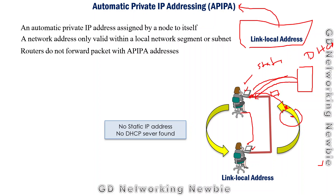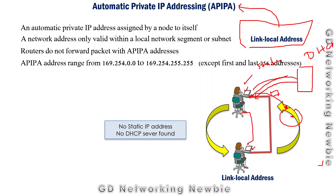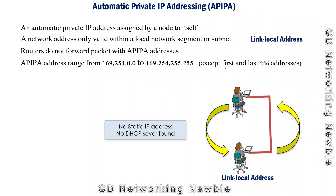With APIPA, nodes can communicate using a specific address range. That range is from 169.254.0.0 to 169.254.255.255. Nodes can randomly select any IP address within this range. However, the first and last 256 IP addresses within this range are reserved and not used.